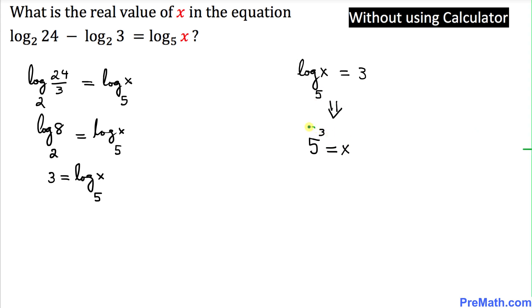And we know that 5 power 3 means that we're going to multiply 5 three times. That is going to be 125 equal to x. So thus our solution turns out to be x equal to 125, and that is our final answer.